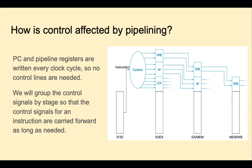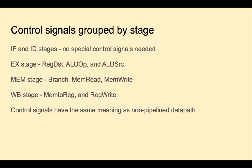How are the control signals affected by implementing pipelining? The good news is that the control signals are going to be the same. The PC and pipeline registers are written to every clock cycle, so they won't need any control lines. The changes we'll make are to group the control signals by stage, so that the control signals for instruction are carried forward on the pipeline registers as long as needed. The first two stages, IF and ID, don't need any control signals. And you see for the remaining three stages, the signals that they will need.